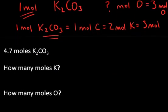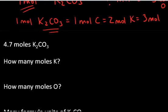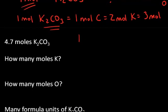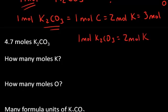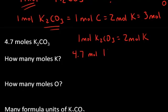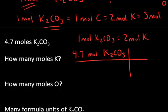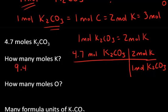Say we have 4.7 moles of potassium carbonate in a sample. How many moles of potassium would be in that sample? We know that one mole of potassium carbonate contains two moles of potassium. We set up a dimensional analysis problem: 4.7 moles of potassium carbonate, times two moles of potassium per one mole of potassium carbonate, and we end up with 9.4 moles of potassium.